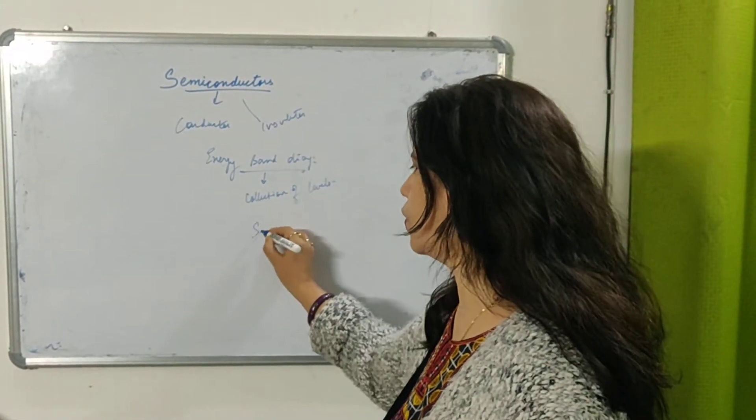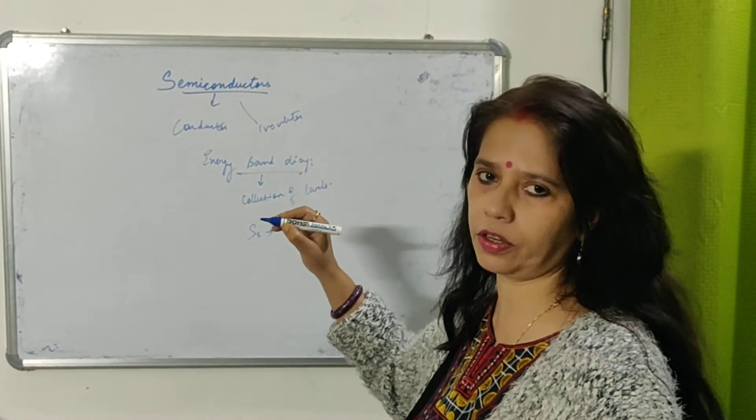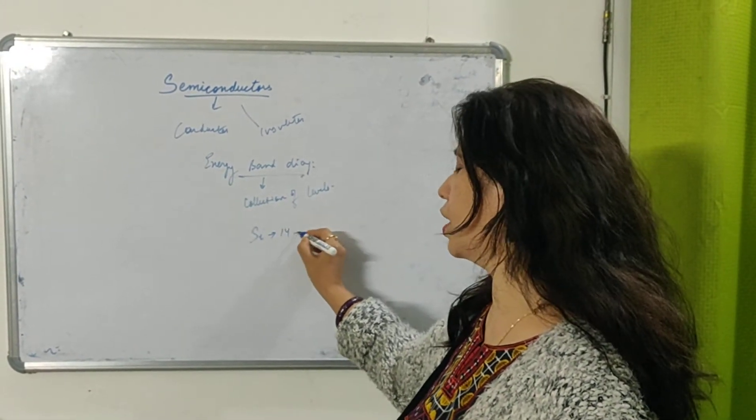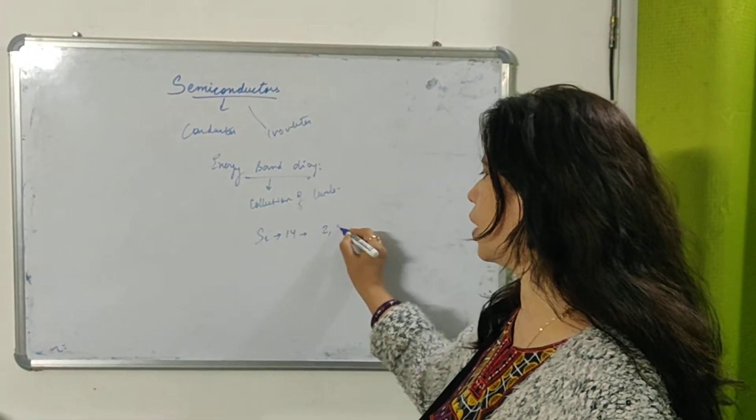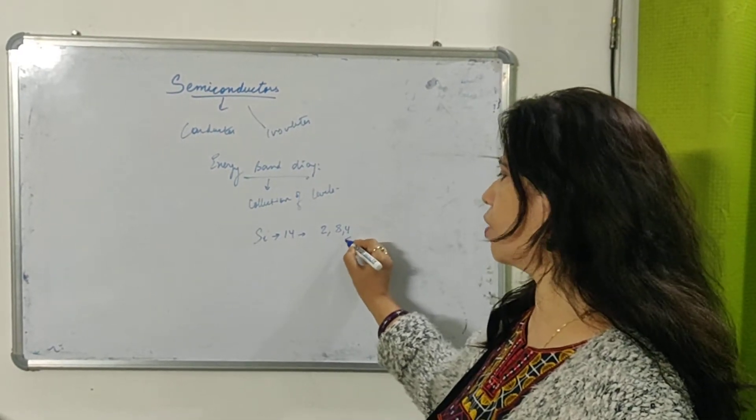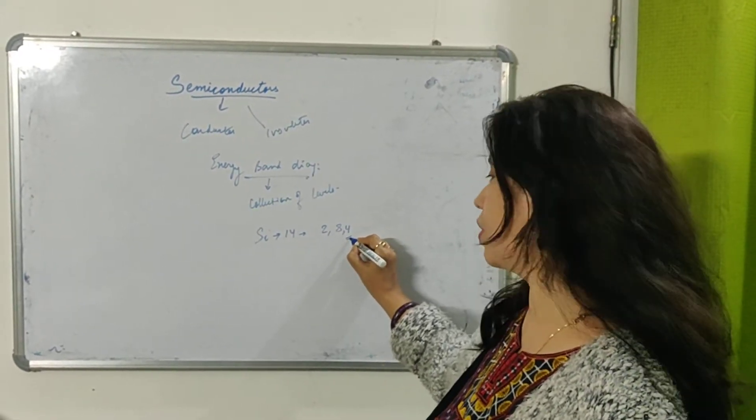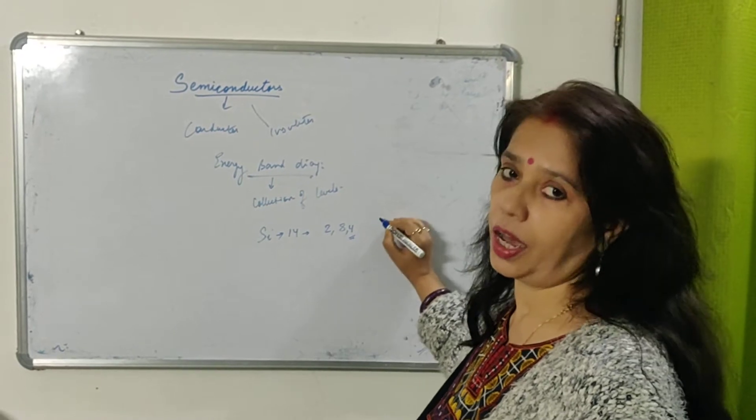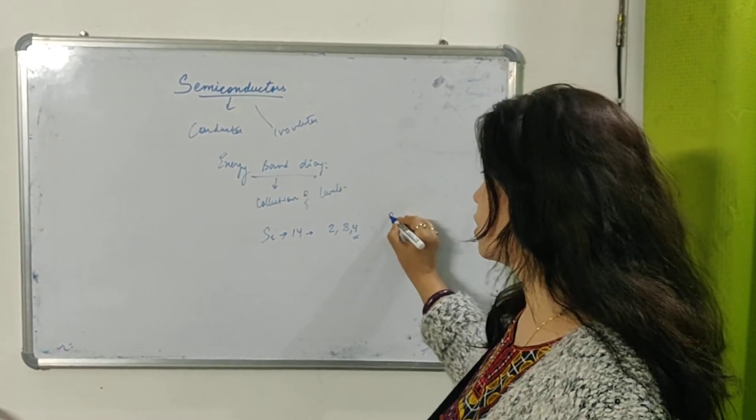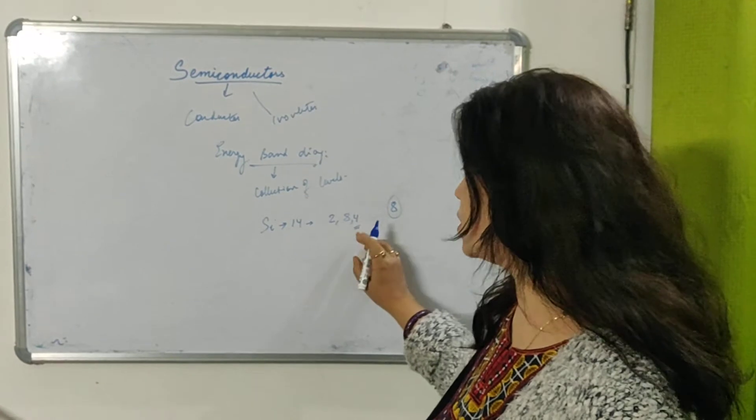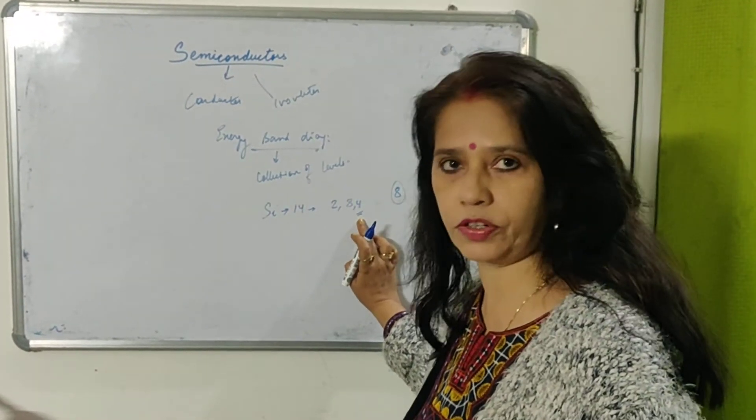Now if I take our silicon, what is the atomic number of silicon? 14. What is the electronic configuration? 2, 8 and 4. So outermost orbit is having 4 electrons. And we know that for octet, how much we need? 8. That means it is deficient of 4 electrons.